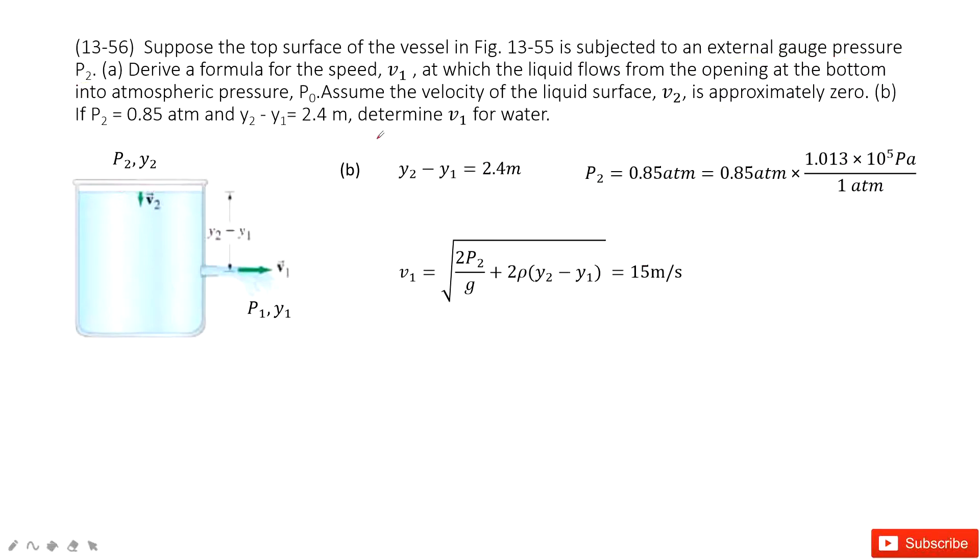Now for the numerical value of v1, let's see what is given. y2 minus y1 is given as 2.4 meters, and p2 is given. Now we input p2 and y2 minus y1, and we get the final answer: 15 meters per second.